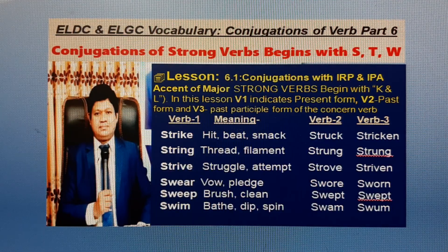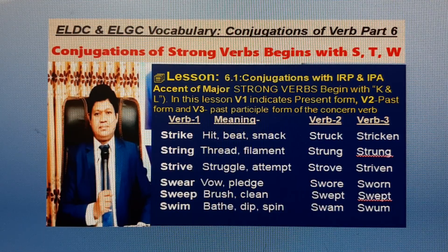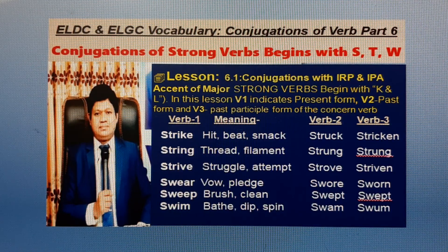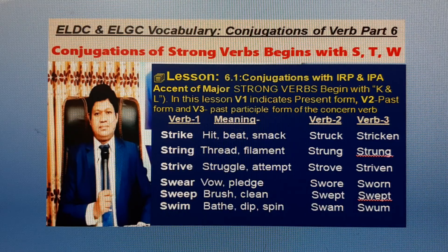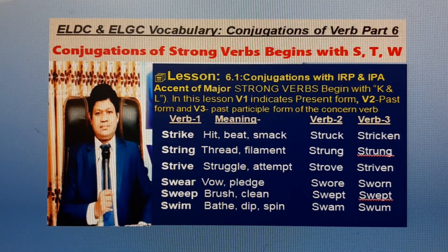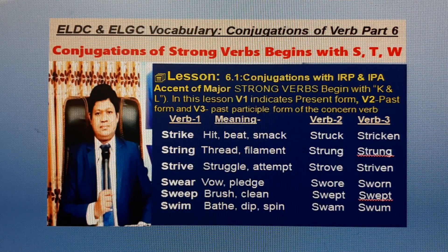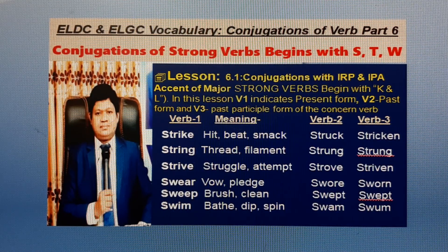Verb base form B1: Strike. English meaning: Hit, Beat, Smack. Bangla meaning: Agat Kora. First form B2: Strike. Past participle form B3: Strike. Next verb B1: String. English meaning: Thread, Filament. Bangla meaning: Tarlagano. B2: Strung. B3: Strung.